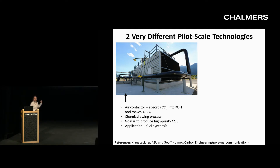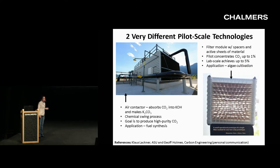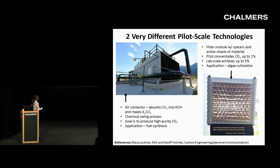The point is that Carbon Engineering needs high-purity CO2 because they use it as a feedstock for fuel — taking CO2 from 400 ppm up to 98% purity. Klaus Lackner, on the other hand, is taking CO2 for algae cultivation — interested in impurity levels of 3% to 5%, so taking CO2 from 400 ppm up to just 3–5%. It turns out it's a lot less energy-intensive to do that than to reach 98% purity. So you have cost estimates of $200 a ton for one process and as low as $60 a ton for the other.